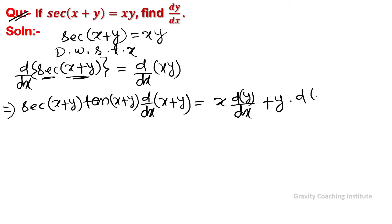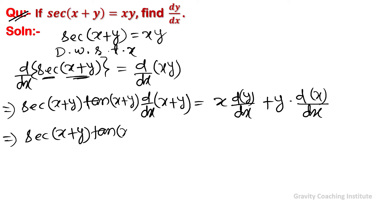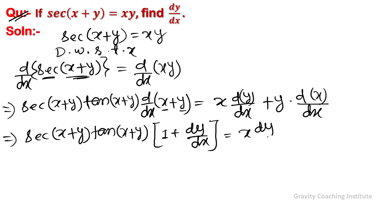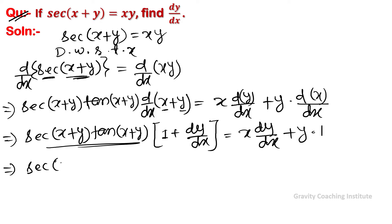This gives us: sec(x+y) · tan(x+y) · (1 + dy/dx) on the left side, equal to x·(dy/dx) + y·1 on the right side.